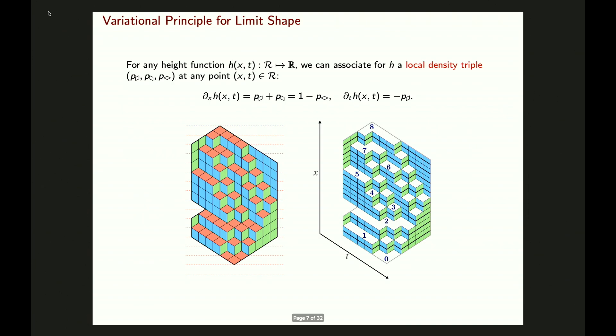Before we state their results, let me introduce some more notation. We can view those lozenge tilings as surfaces given by the height function — heights are row one, two, three, and keep going. Those height functions can be encoded by the local density triple: the local densities of the three types of lozenges, which sum to one. There is a bijection: the x-derivative of the height function is given by the local density of the green and blue lozenges.